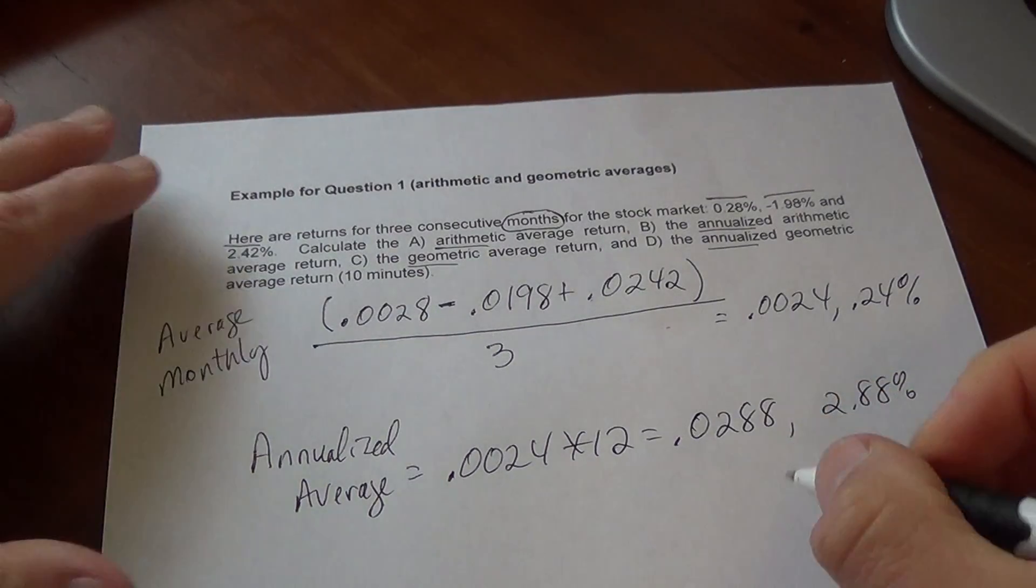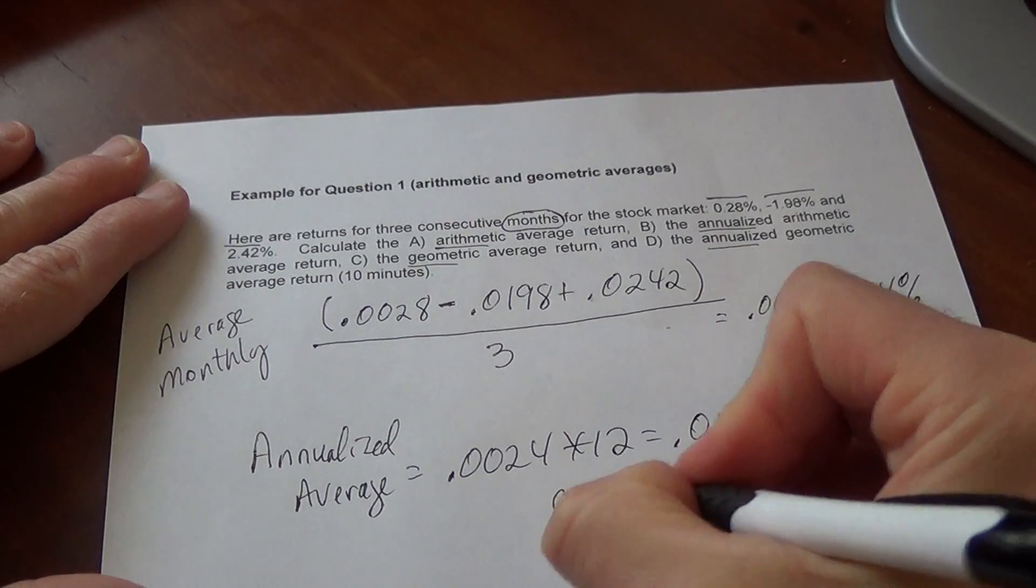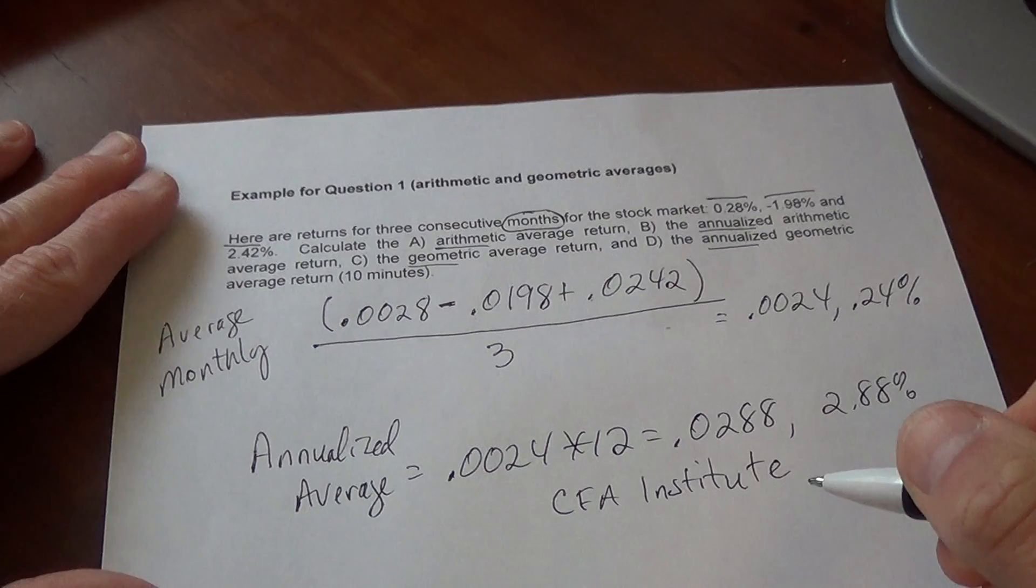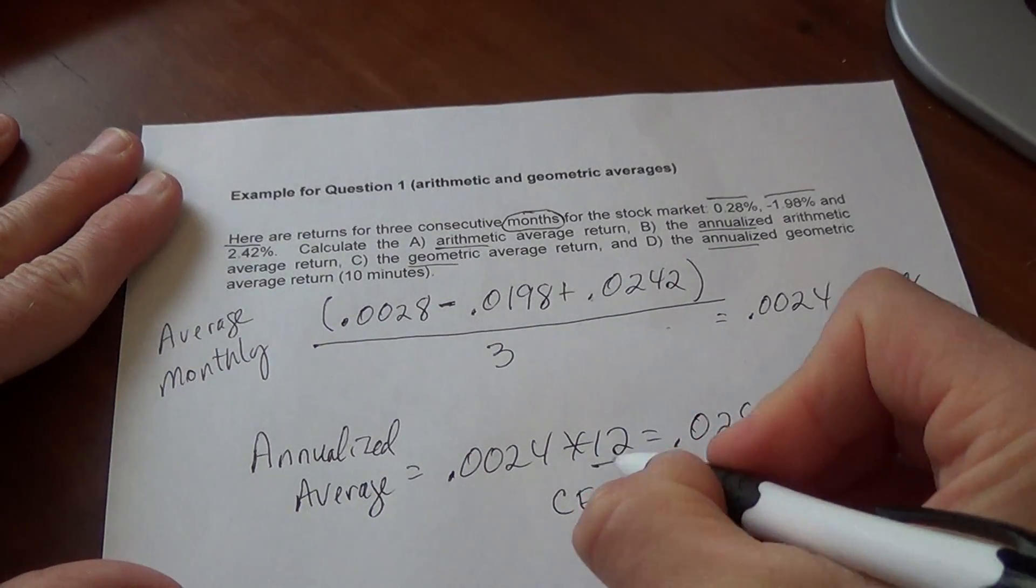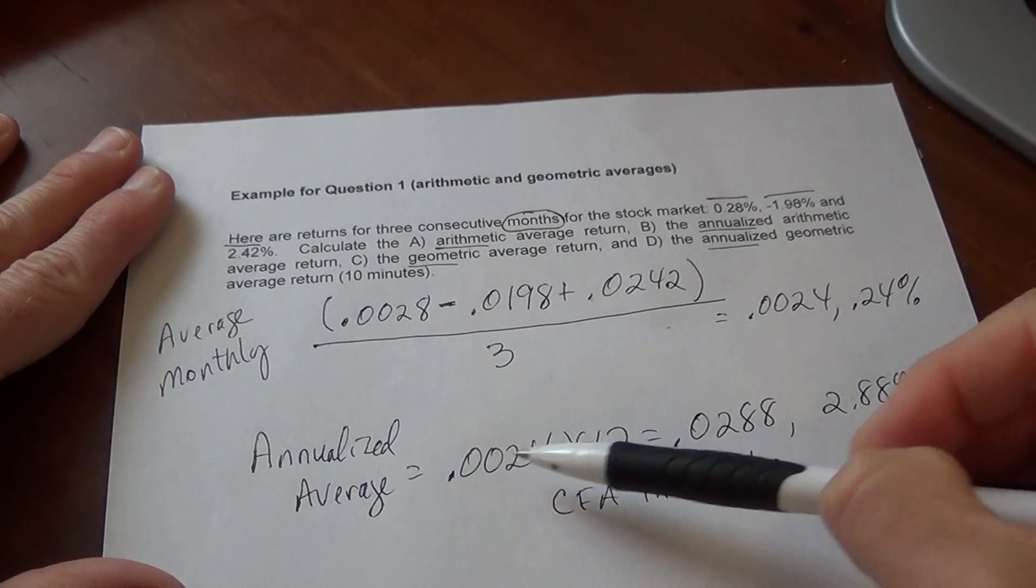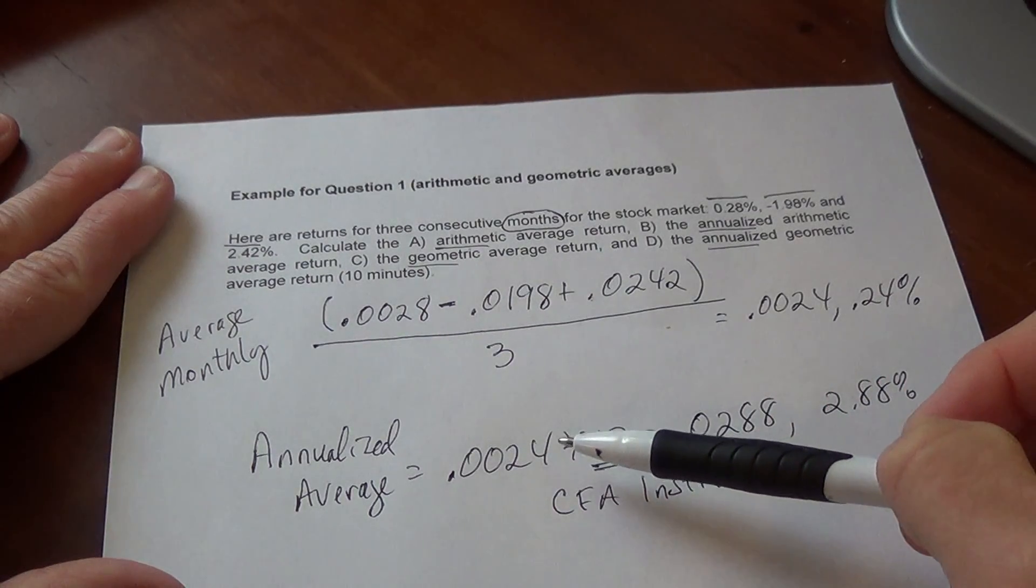Do note, as we talked about, according to the CFA Institute, they're the ones who dictate the rules for reporting performance. It is not allowed to annualize averages if you have less than one year worth of data.